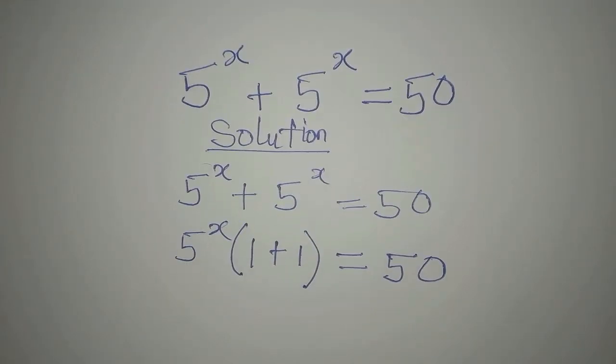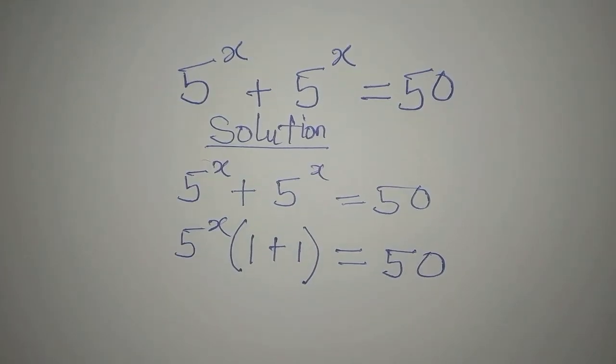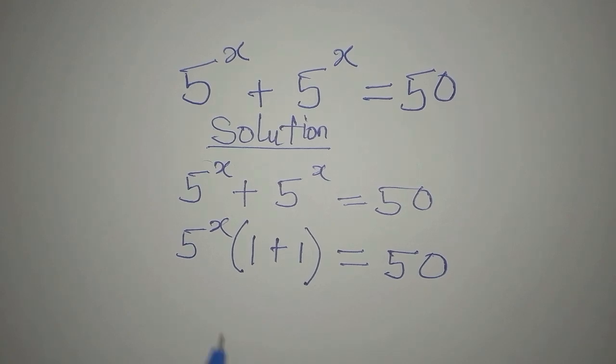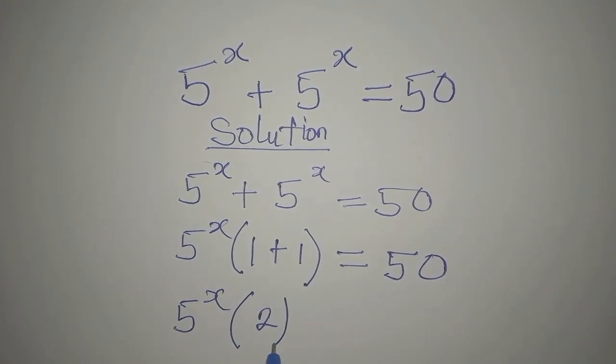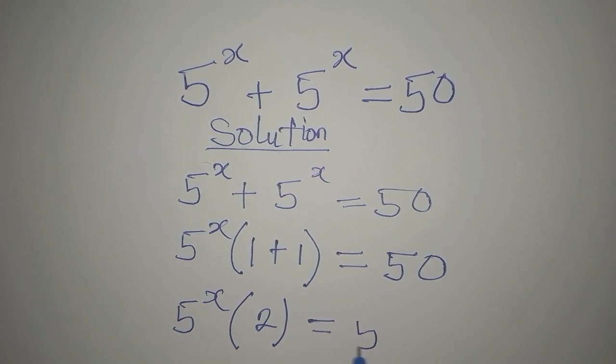So if we go ahead now, we're going to have 5 to the power of x multiply by 2, and this equals 50.